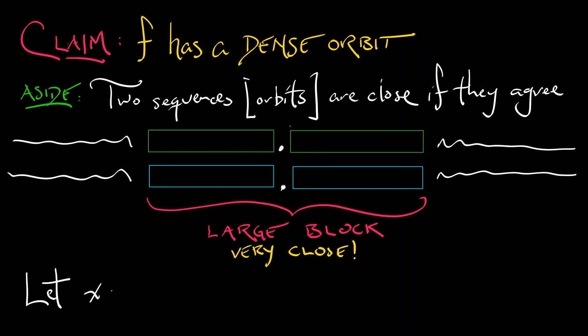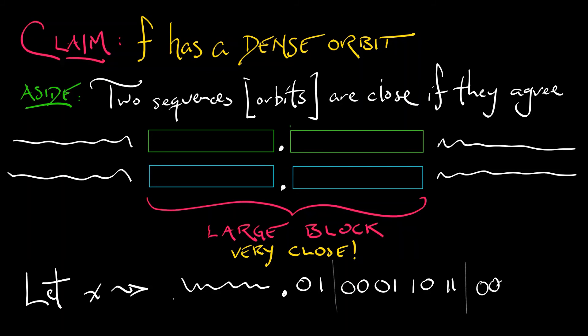We're going to do that the same way we did it for non-invertible systems: write down a symbol sequence that has within it all possible finite strings of zeros and ones. You can do so by putting in a decimal point and then all strings of length 1, length 2, length 3, length 4, length 5, and so on. There's a lot of space to pack things in. This particular itinerary corresponds to an orbit that's dense in forward time. Make it symmetric — just reflect about the decimal point — and you've got something that is dense in backwards time as well. There is so much space in a bi-infinite sequence.